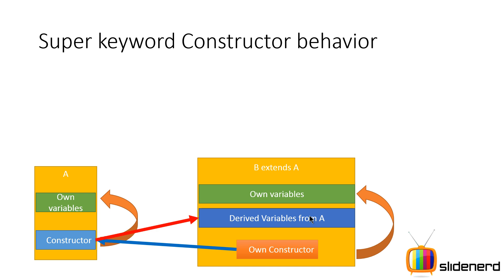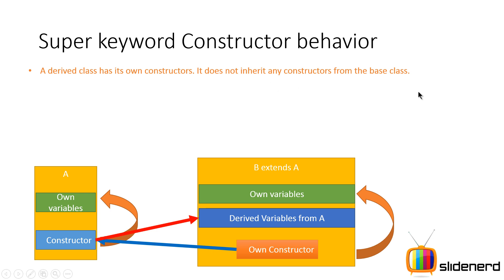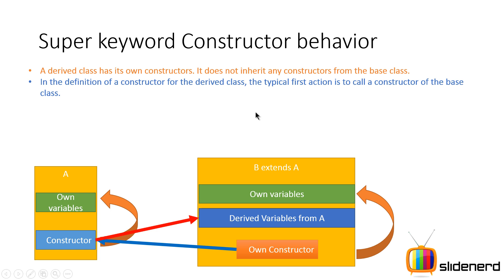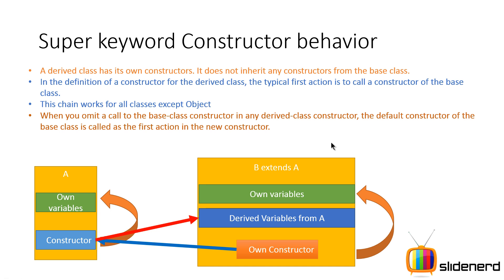This same cycle happens across multi-level inheritance. Remember these key points: a derived class has its own constructors and does not inherit any constructors from the base class. Every constructor only knows how to work with its own variables, so it calls the superclass constructor to handle inherited variables. The first action in any constructor should be to call the base class constructor - except in the Object class, which is the cosmic superclass in Java and has no class above it. When you omit the call, the default constructor of the base class is called automatically.